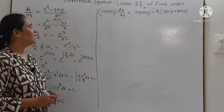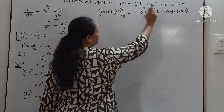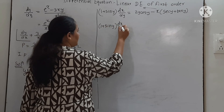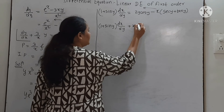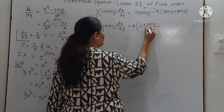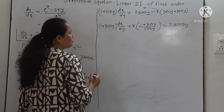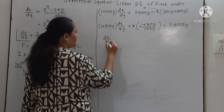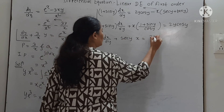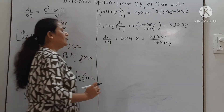We will take the next example: (1 + sin y) dx/dy = 2y cos y − x(sec y + tan y). The highest power of x is 1, so we convert this into linear in x. Rearranging: (1 + sin y) dx/dy + x · (1 + sin y)/cos y = 2y cos y. Dividing throughout by (1 + sin y): dx/dy + (sec y) · x = 2y cos y/(1 + sin y).